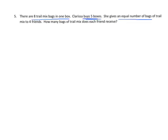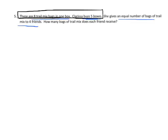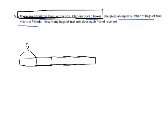The last problem for this video: there are 8 trail mix bags in one box. Clarissa buys 5 boxes. Then she gives an equal number of bags of trail mix to four friends — so this has a couple of different steps. How many bags of trail mix does each friend receive? Let's model it. There are 8 trail mix bags in one box, and Clarissa buys 5 boxes. So one box would have 8, but she's buying 5: 1, 2, 3, 4, 5. There's our total — she's buying five of them, and each one has 8.